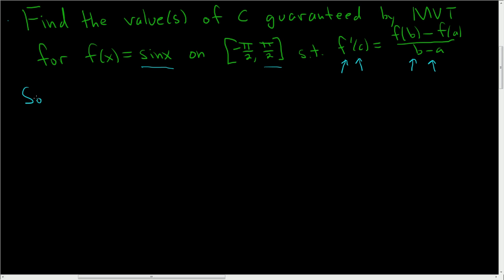Okay, so solution. So all we have to do is find C. That's all we have to do. And we have to find C by solving this equation, right? So let's take the derivative. So f prime of x. Well, the derivative of sine x is cosine x.